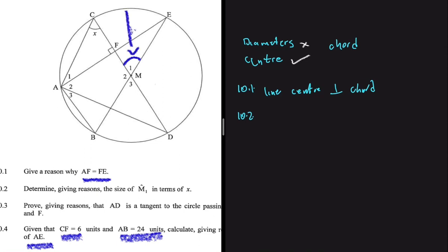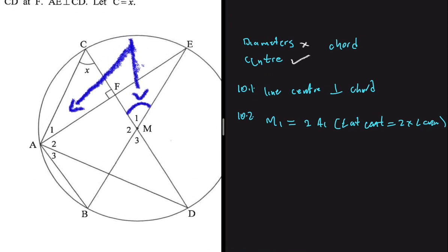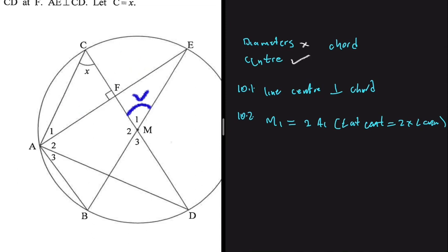Arc CE is also subtending angle A1, so we can say M1 equals 2 times A1 — angle at center equals twice angle at circumference. But we need M1 in terms of x, so we need A1 in terms of x. A1 is in triangle ACF. We have x at angle C, and angle F is 90 degrees, so we can find A1.